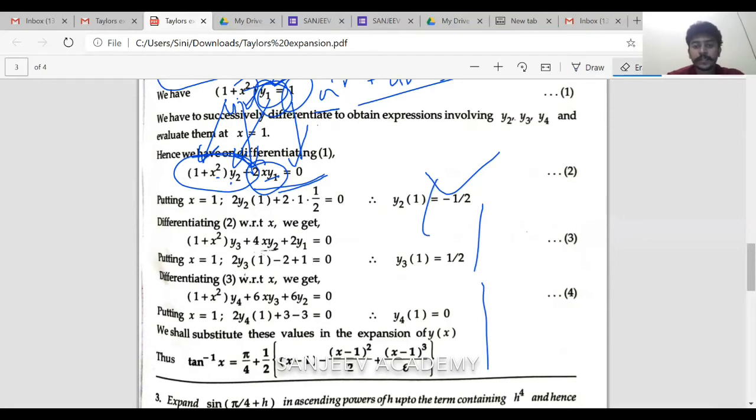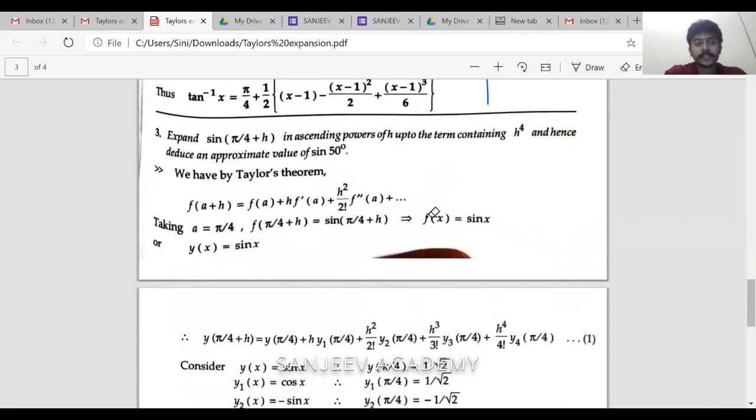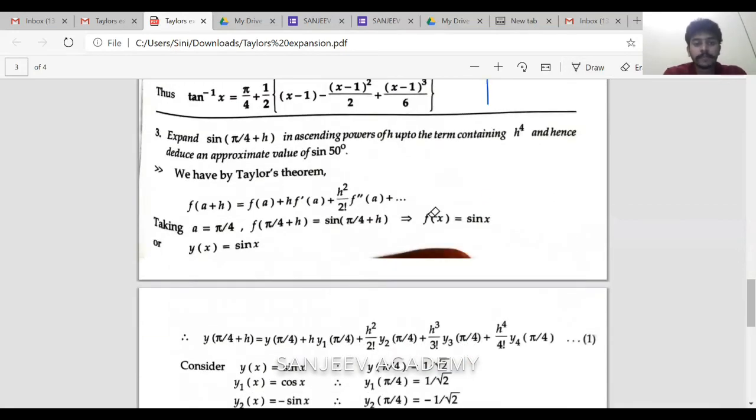Let's take the next question. Expand sin pi by 4 plus h in ascending powers h power 1, find the value of sin 50. So first take the calculator and find the value of sin 50. These questions may not be asked but I'll tell you what is the logic. Again in this particular kind of question, sin 45 what is the value? 1 by root 2. Sin 50 is only 1 by root 2. So pi by 4 plus h.